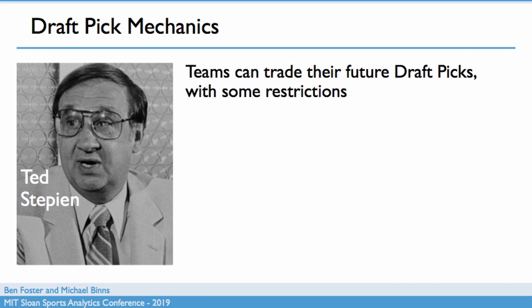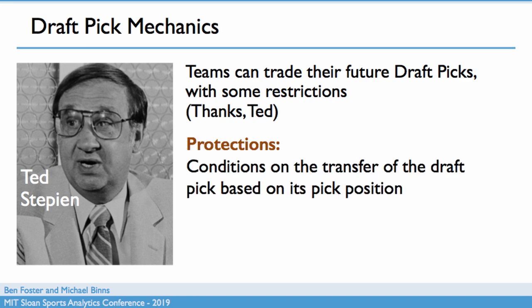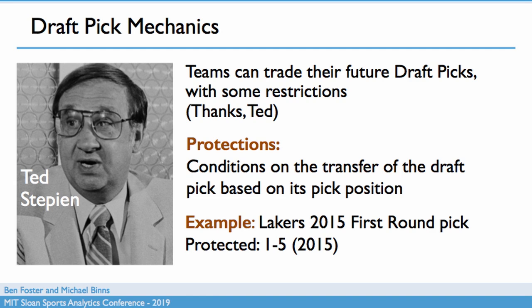Teams can trade their first-round draft picks, although there are some restrictions on that now, thanks to our friend Ted. But what is most interesting is that when they trade those draft picks, they're allowed to add something called protections to the draft picks. These are conditions on the transfer of the draft pick based on its pick position. The easiest way to understand these is through an example, and we'll use this throughout the talk.